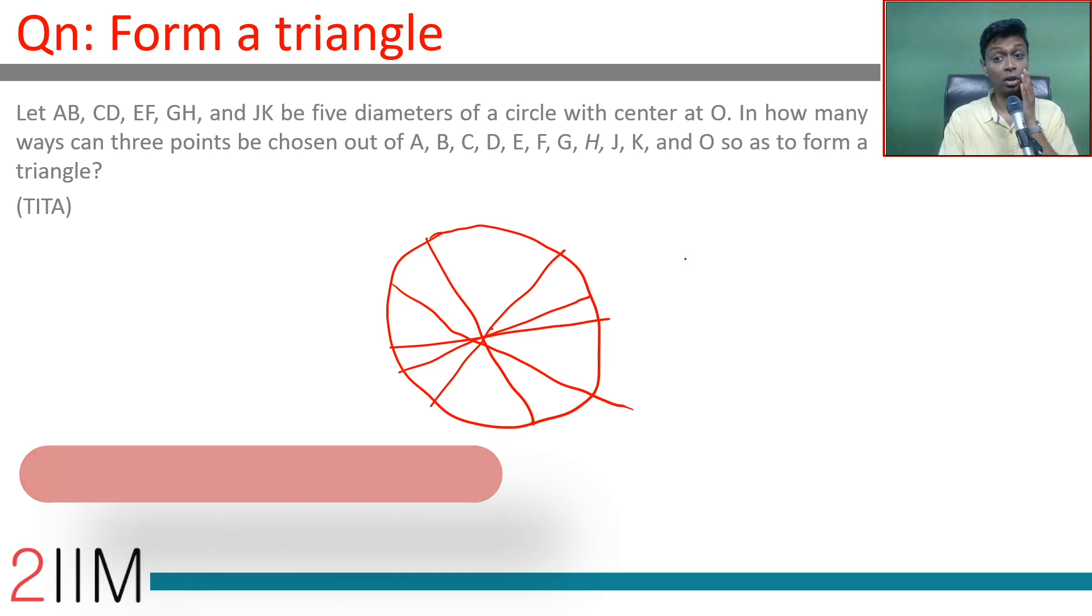Five diameters of a circle with center at O. In how many ways can three points be chosen out of A, B, C, D, E, F, G, H, J, K, and O so as to form a triangle? Any three points lying on a circle are non-collinear, so there are 11 points here.